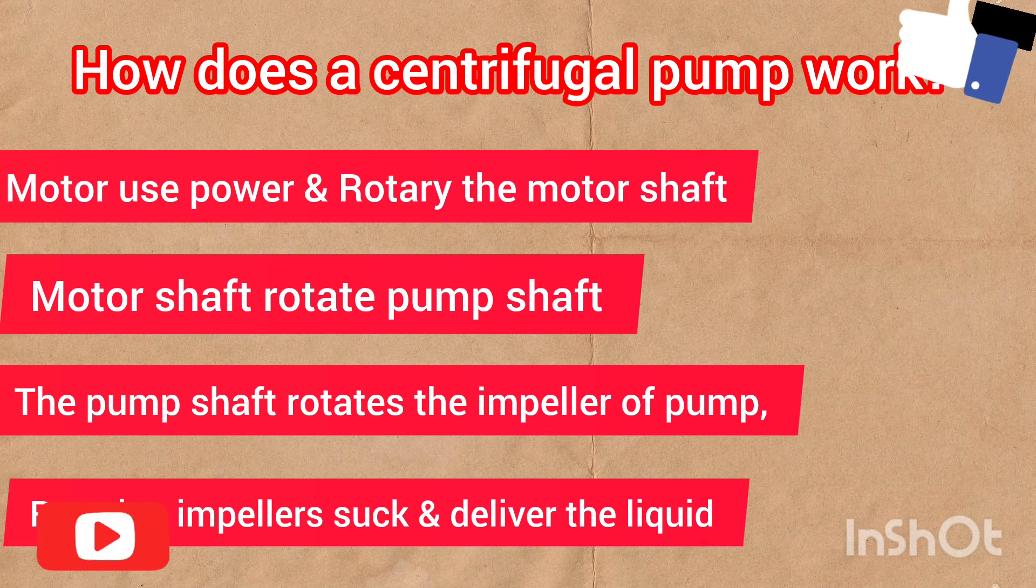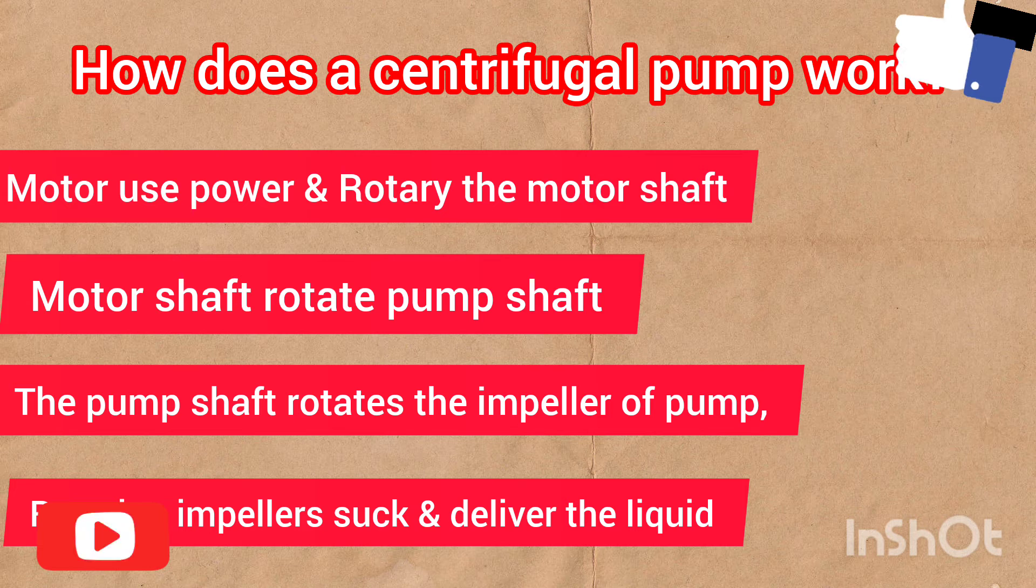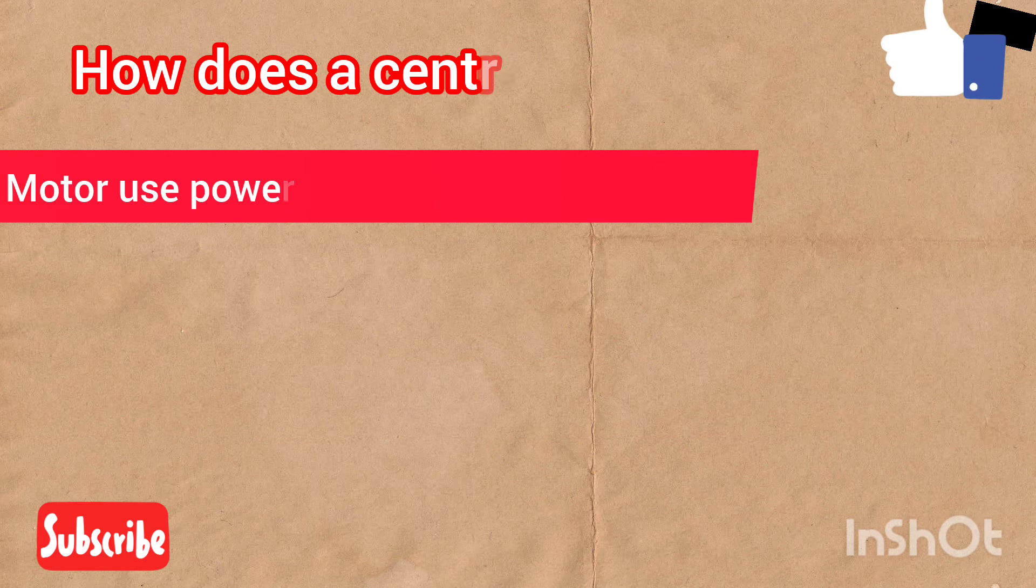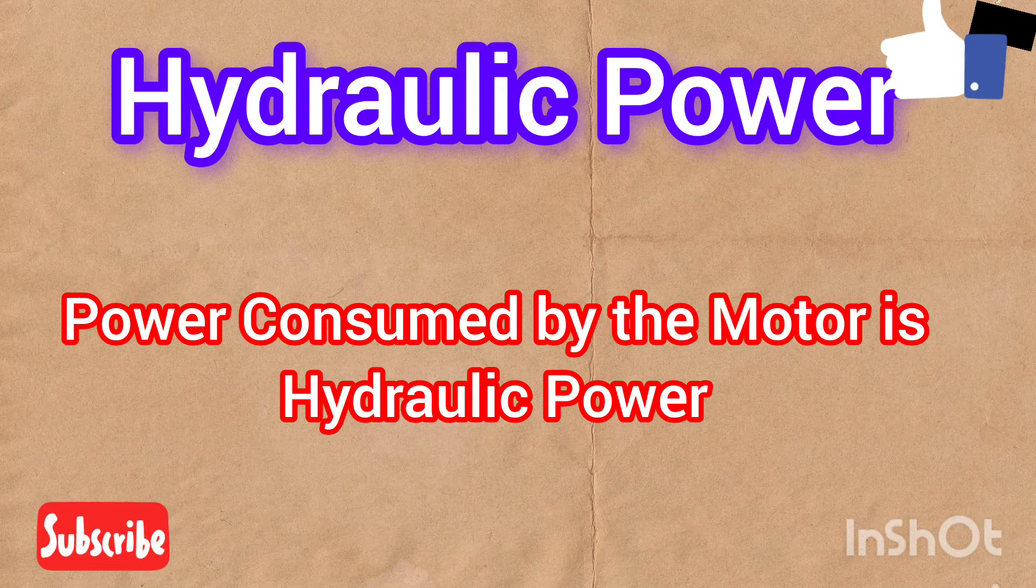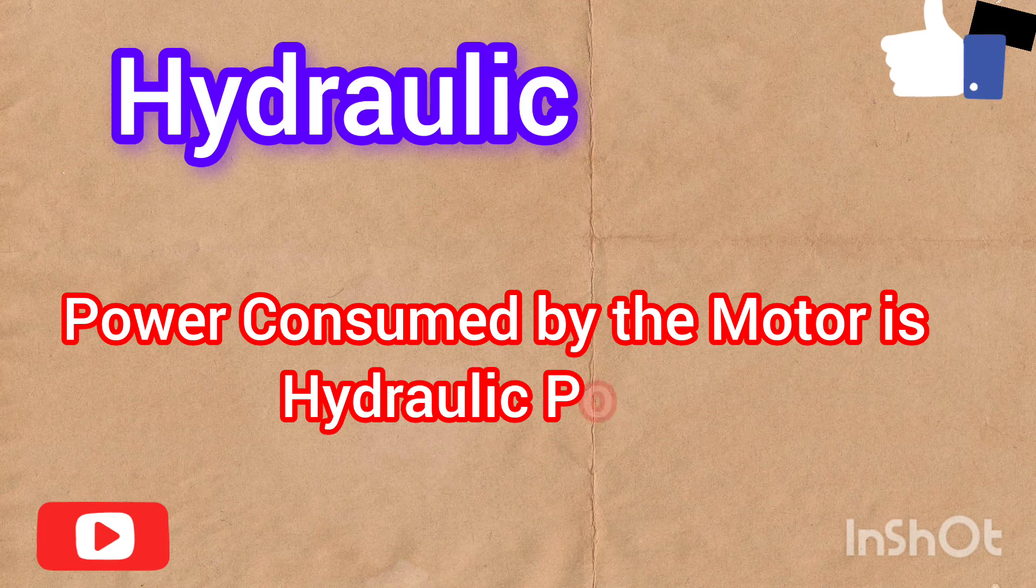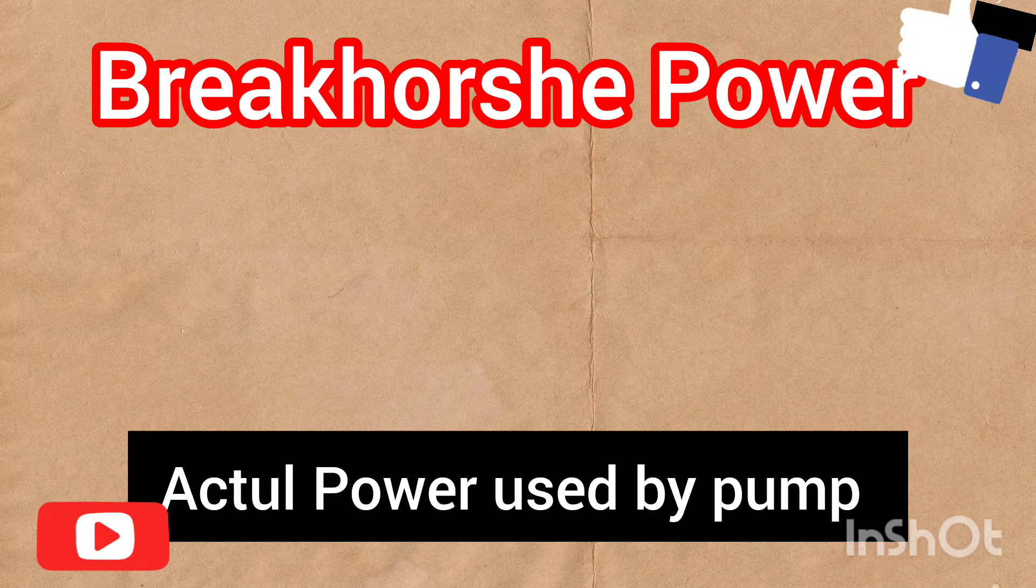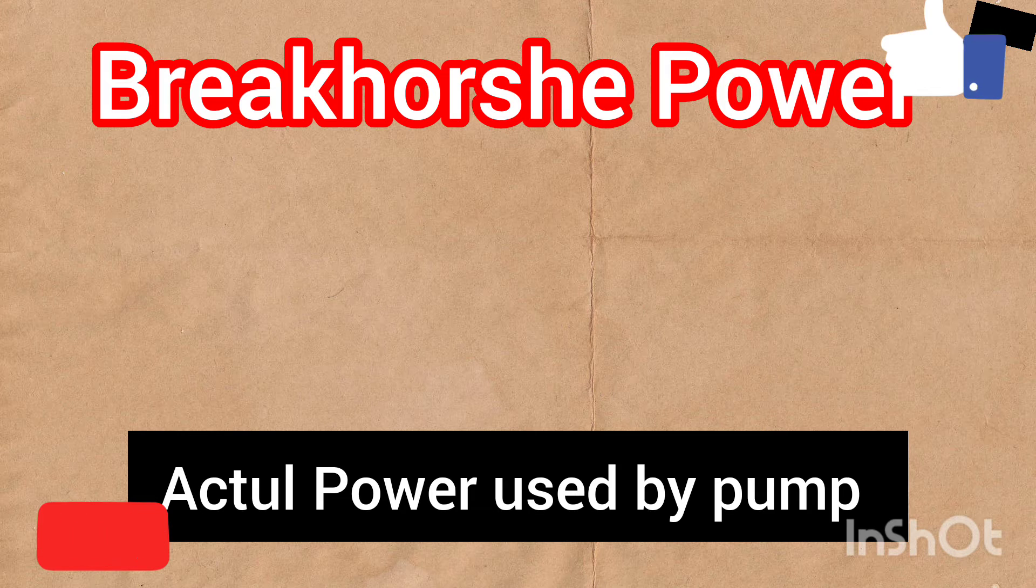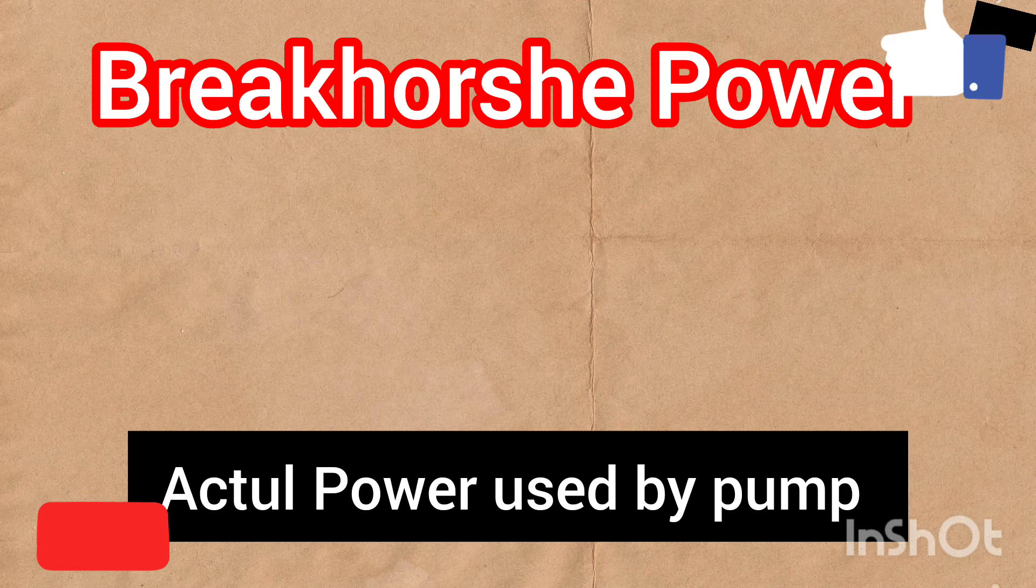Now the point is what is hydraulic power and what is BKW power. Hydraulic power is the power consumed by the motor, while BKW power or brake horsepower or pump shaft power is the actual power consumed by the pump. In short, hydraulic power is power consumed by the motor for this operation and BKW power is the actual power consumed by the pump. Hydraulic power is always greater than the BKW.